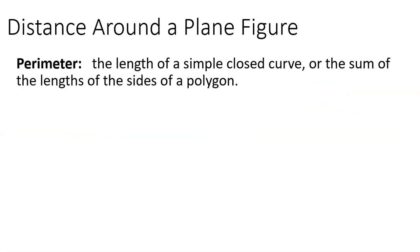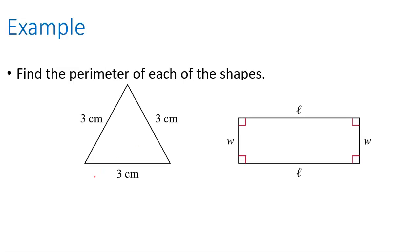Distance around a plane figure — a plane figure being some figure that lies in a two-dimensional plane — we call the perimeter. If it's a circle, we call it the circumference. You're walking around something and want to find how long that distance is. The sum of the lengths of the sides of a polygon is called the perimeter. So if you want the perimeter of this triangle, it's 3 plus 3 plus 3. Perimeter is a linear measure, so we answer in units that measure length — in this case, centimeters.